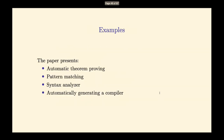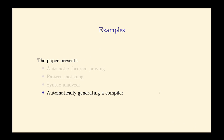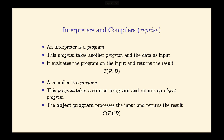Let's recall our definitions. An interpreter is a program that takes another program and data as input and gives back the result. A compiler is a program that takes a source program as argument and returns an object program, and this generated object program processes the input and returns the result.